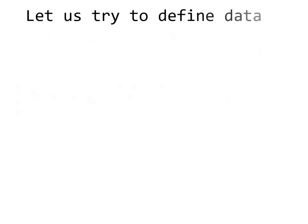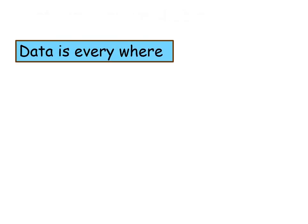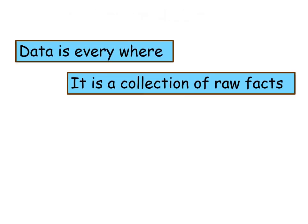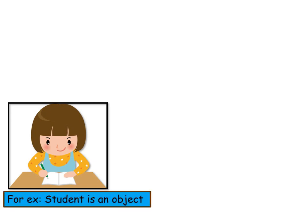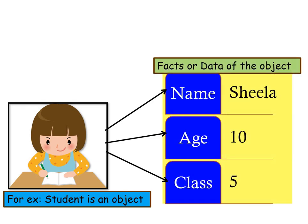Let us try to define data. Data is everywhere. It is a collection of raw facts. Let us take the example of a student. Here, a student can be considered to be an object. The facts about this object can be: name — Sheila, age — 10, class — 5.